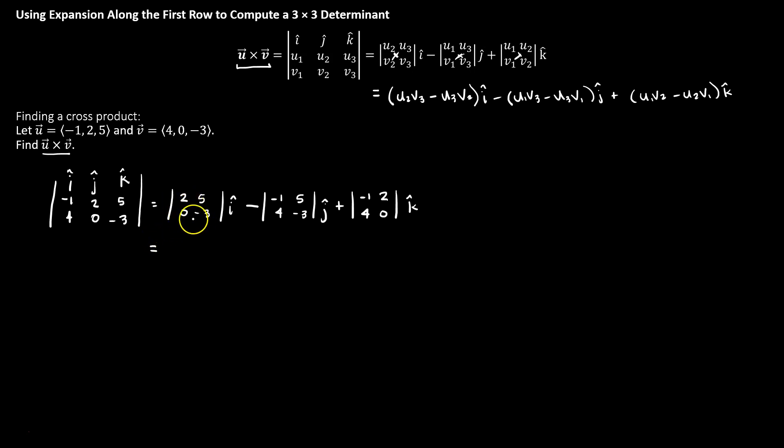Alright, now we need to evaluate each of these 2x2 matrices. So I'll multiply my first diagonal, I get -6, my second diagonal, I get 0.